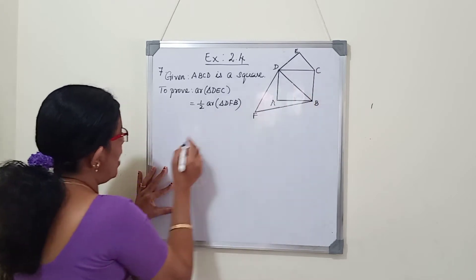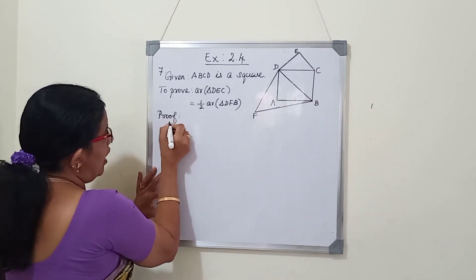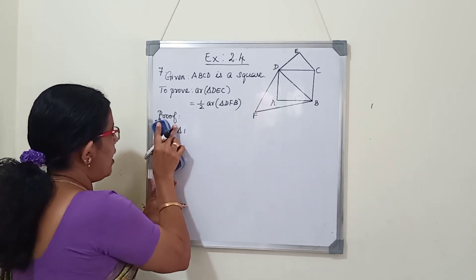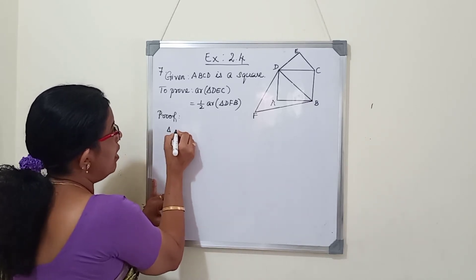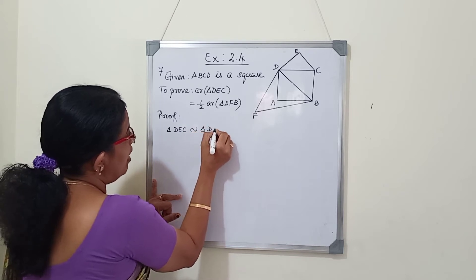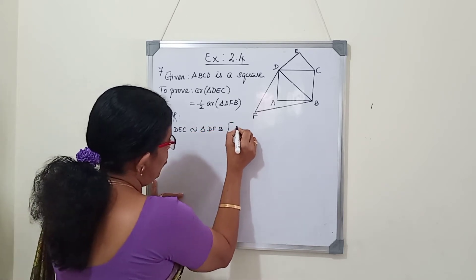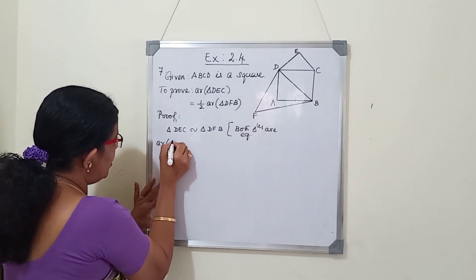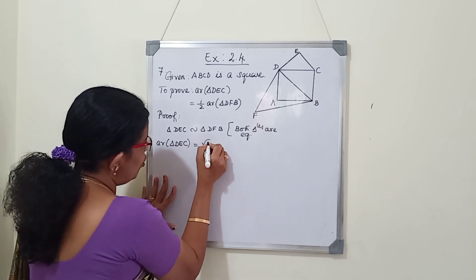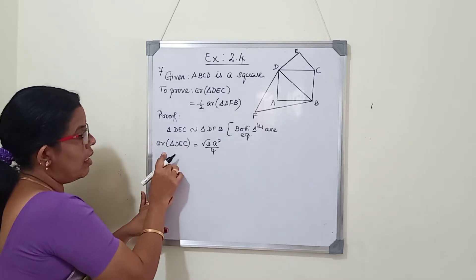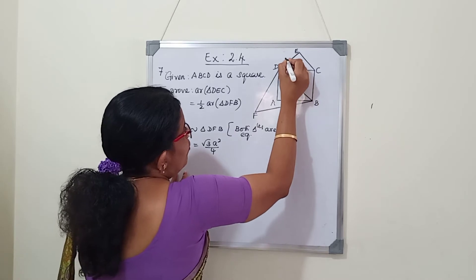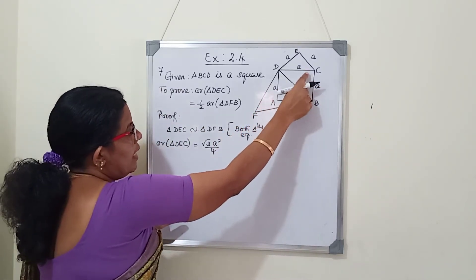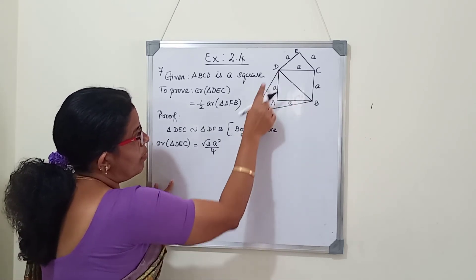First we find the area of triangle DEC. As it is an equilateral triangle, area equals root 3 times A square by 4, where A is the side of the equilateral triangle. All sides of the square are also equal to A. So area of triangle DEC is root 3A square by 4. Now we need to find the area of triangle DFB, whose side is the diagonal DB.